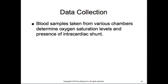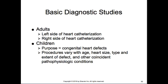Intracardiac shunts are frequently evaluated in pediatric patients. Basic diagnostic studies include left-side and right-side heart catheterization. In pediatric patients, we look at congenital defects — heart size, type and extent of defects, and other congenital pathophysiological conditions. MRI is increasingly being used instead of catheterization to evaluate blood flow and cardiac muscle without contrast, though it is a long procedure requiring sedation in children, just as catheterization does.